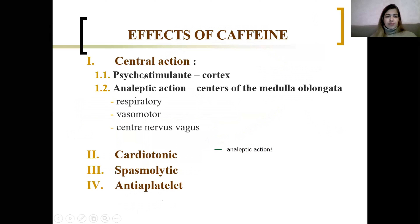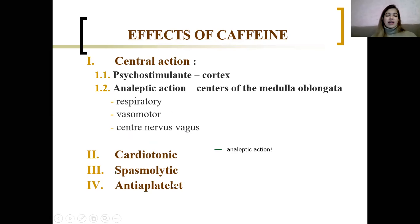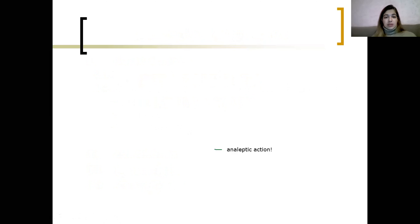To summarize caffeine's effects: centrally it has a psychostimulating effect and an analeptic action by stimulating centers of the medulla oblongata — the respiratory center and the vasomotor center. It also has a cardiotonic action — direct stimulation of the heart conflicting with the vagus nerve. Then spasmolytic action — relaxation of blood vessels and other organs like the GI tract. And finally an anti-platelet effect, meaning platelet aggregation is reduced.